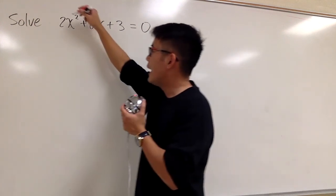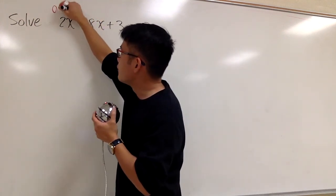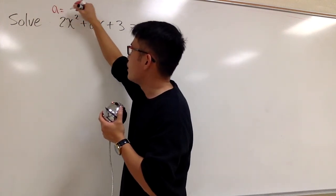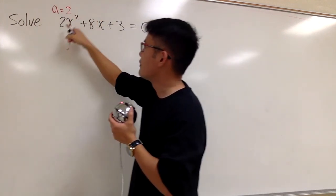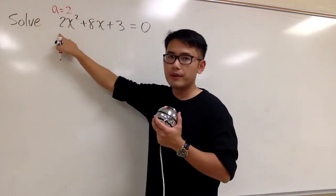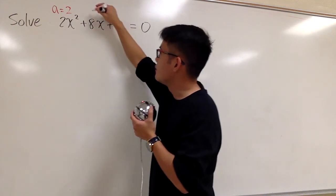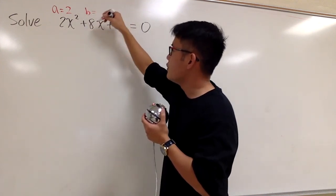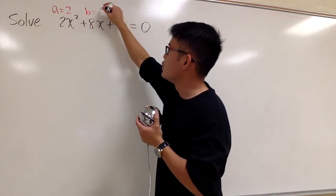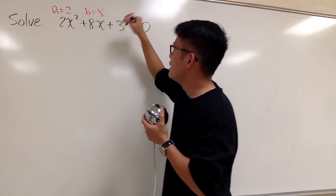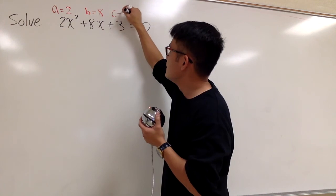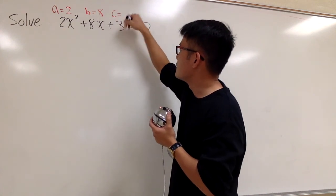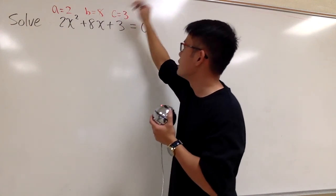Right here, a is the number in front of the x squared, which we have the 2. And then b is the number in front of the x, which we have 8, and then c is just the constant term, which is the 3.